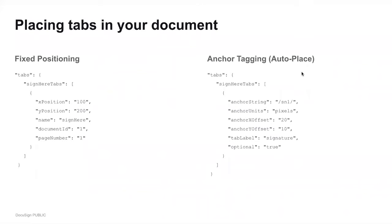The other option, which many people prefer, is anchor tagging, also known as auto place. In this case you use an anchor string — here we're using '/SN1/'. This tab will be placed at every location where that string appears in the document. You'll want to pick a unique string, because you don't want tabs appearing all over the place where they don't belong. We'll get into the other anchor properties in the code demo, where we'll be using anchor positioning.